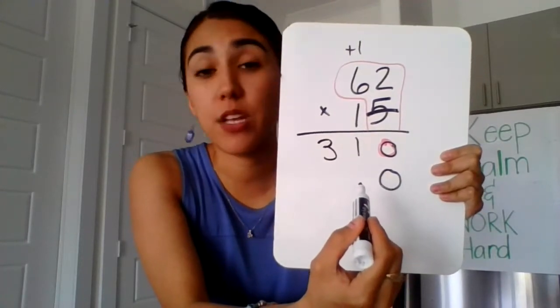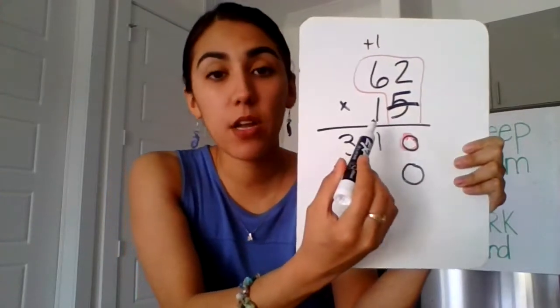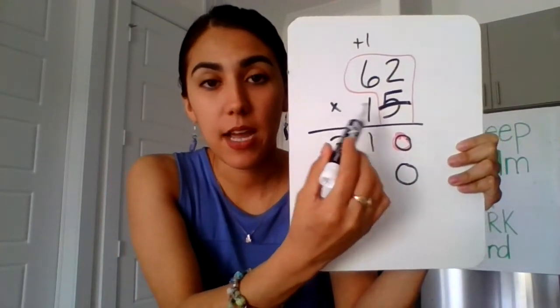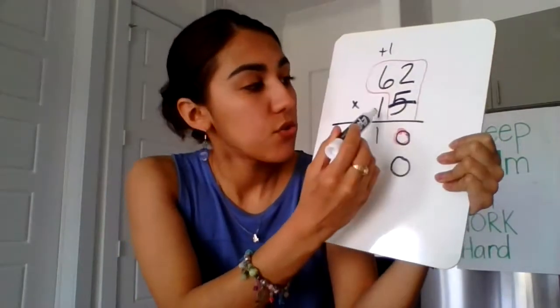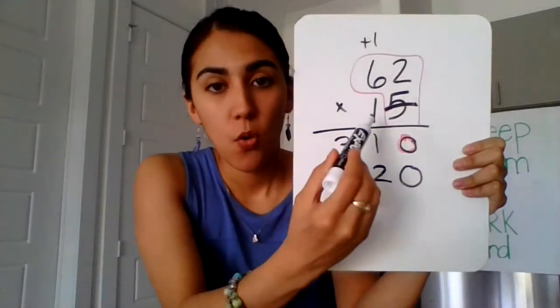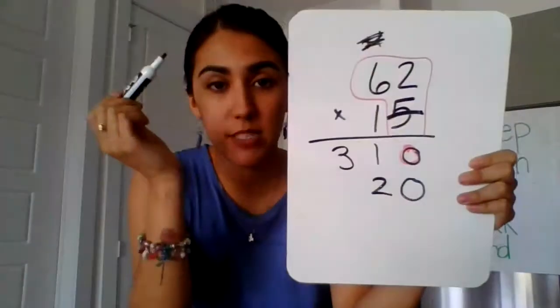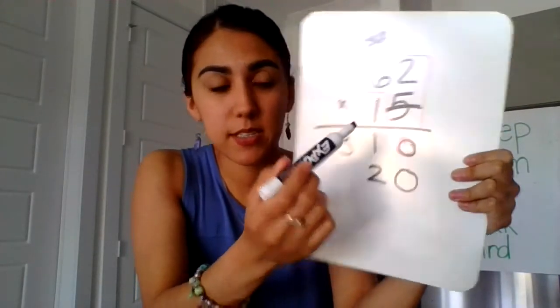You have to do it or else you're going to get it wrong. And then now we're going to multiply that 1 times the 2 and the 6. So 1 times 2 equals 2. 1 times 6, and this is an old one, so I can cross that out. 1 times 6 equals 6.